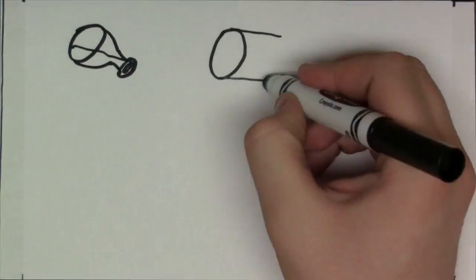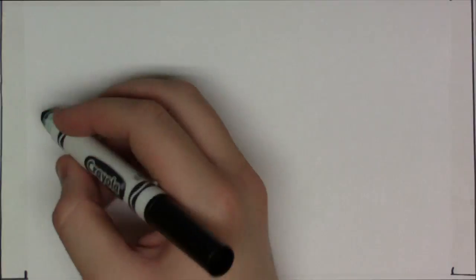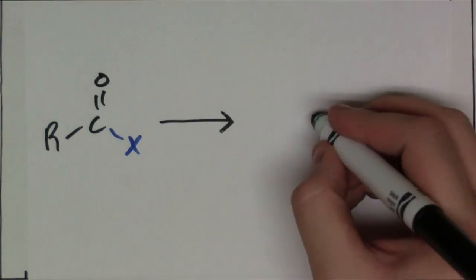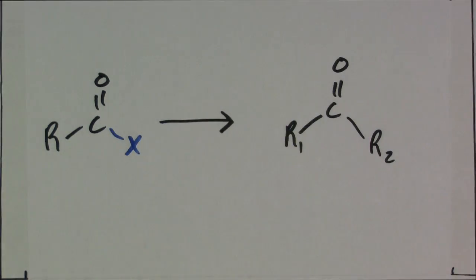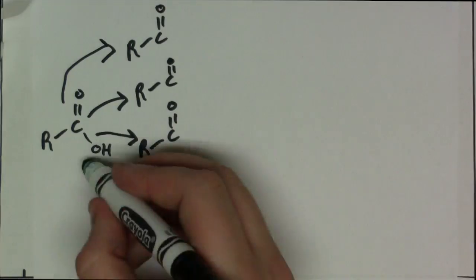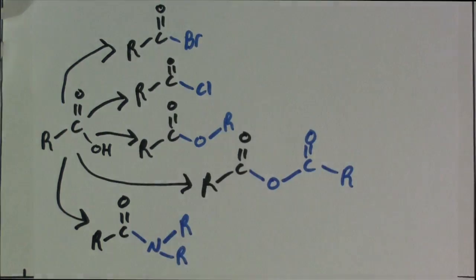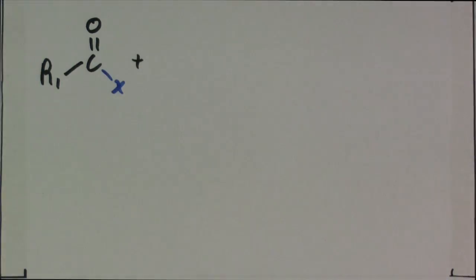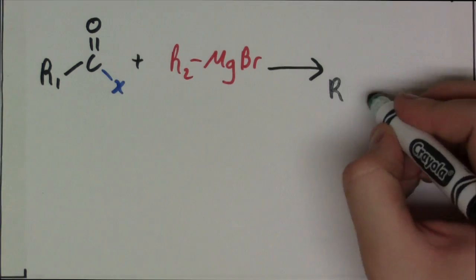Suppose for a moment you're doing some chemistry, and you want to use derivatives of carboxylic acids to make ketones. Derivatives may look like these. You might think, hey, a simple Grignard reaction will work, so you give it a shot.